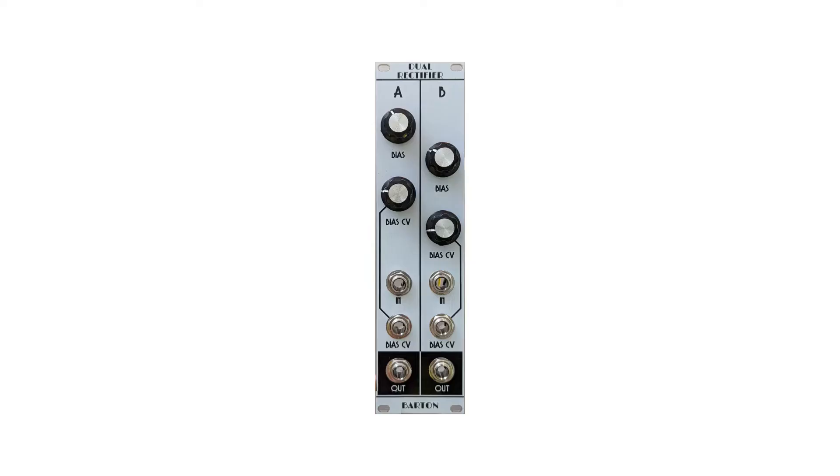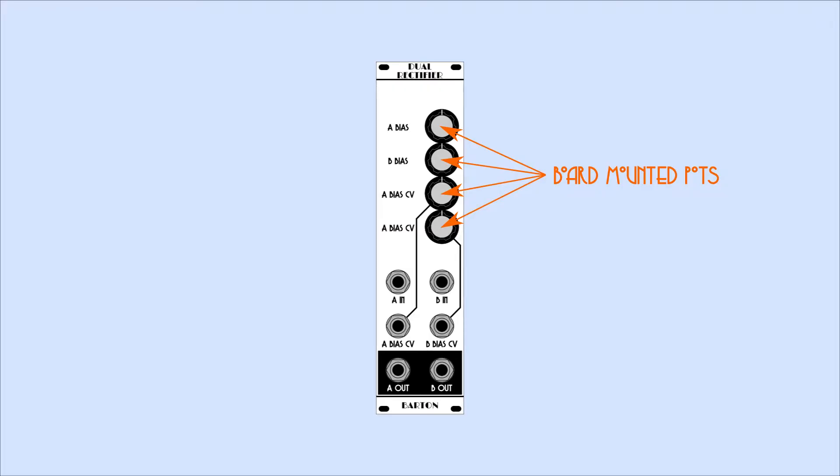So I decided to build one of these and I bought the circuit board from Barton Musical Circuits. I did, surprise, make some changes. One thing is that the circuit board is designed with Eurorack in mind. So there's four potentiometers and they're all board mounted potentiometers, but they're placed too close together for what would be appropriate for a Cosmo format module.